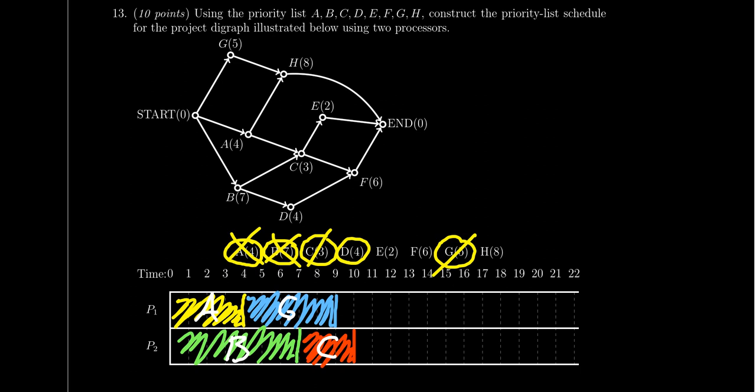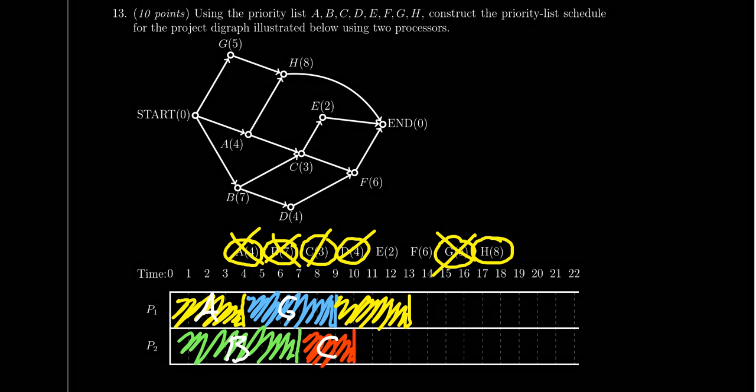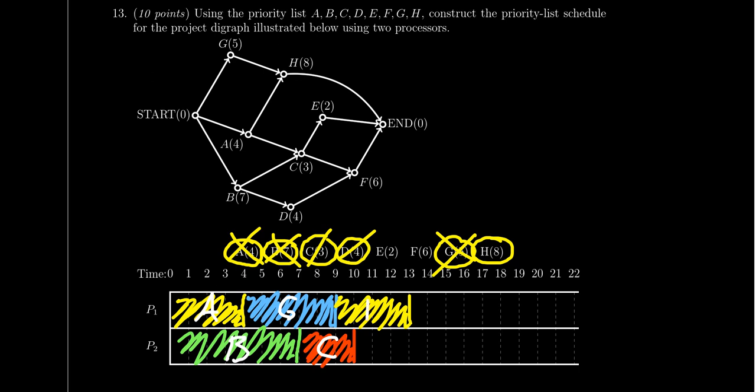Fast forward to time nine. At time nine, processor one will finish task G. Now that G is done, that opens up task H because both G and A are now done. H has lowest priority in our list here. So next we would then choose task D. D will then be given to processor one. D takes four units of time. We're at time nine right now, so this will take us up to 13.